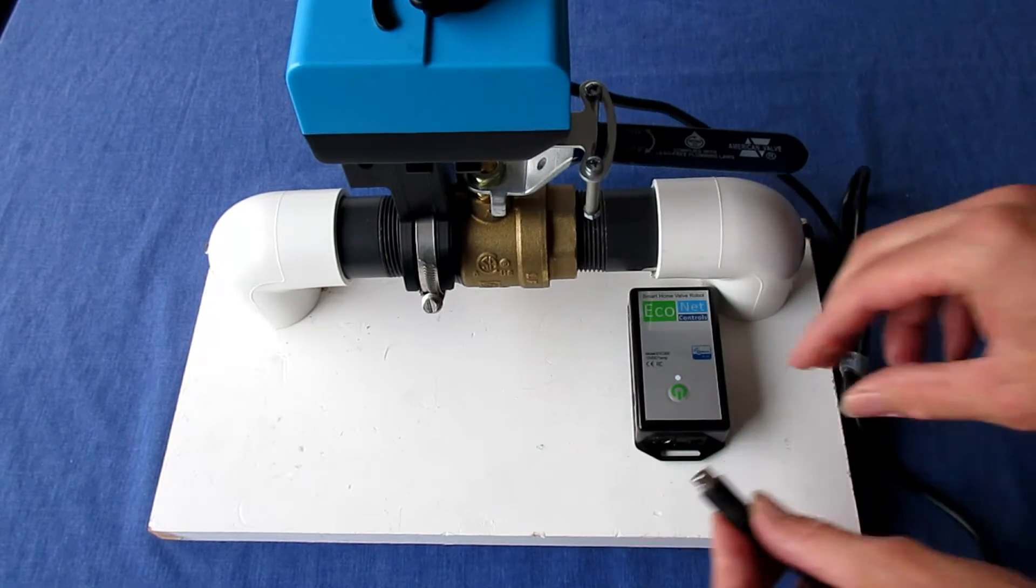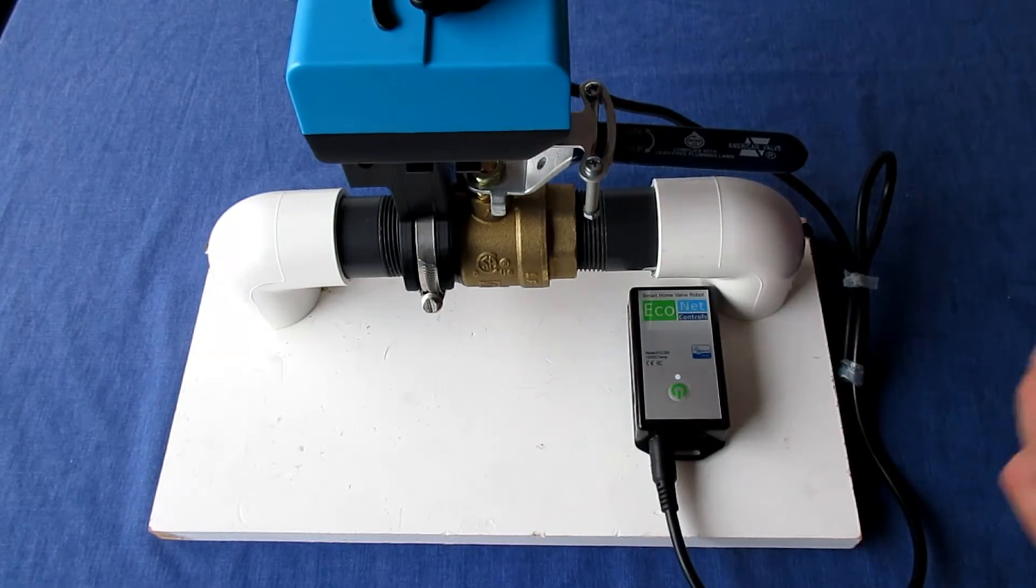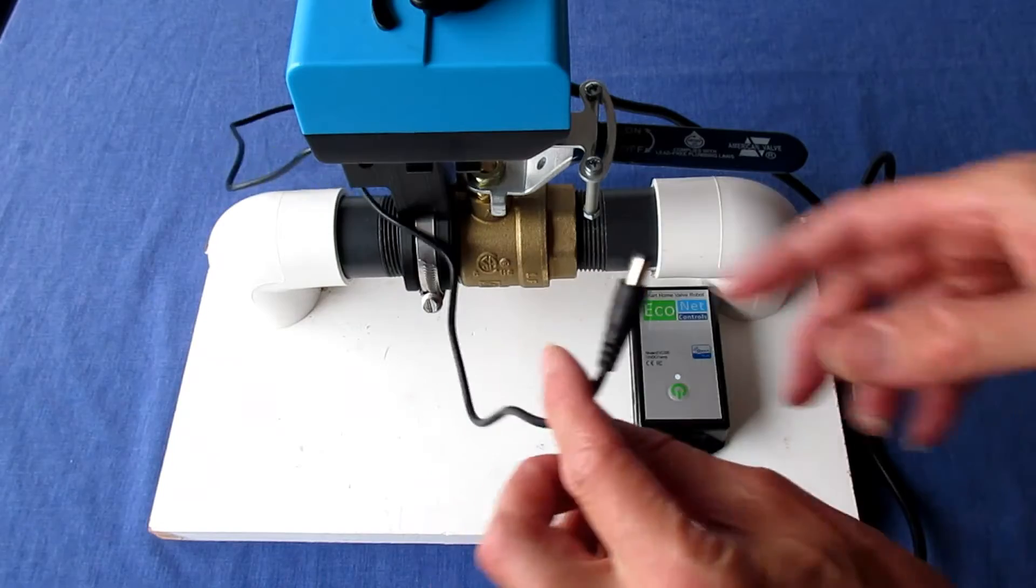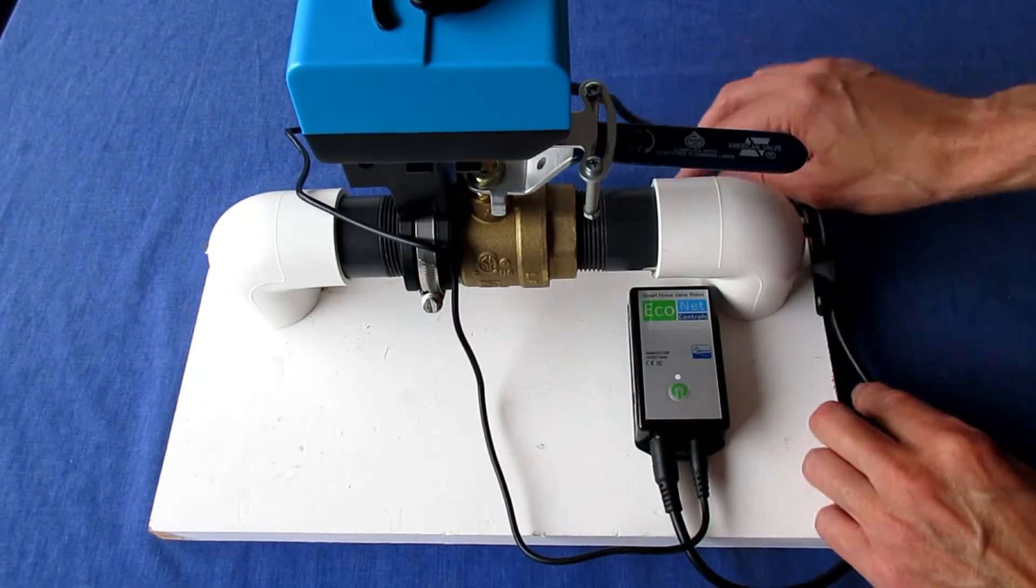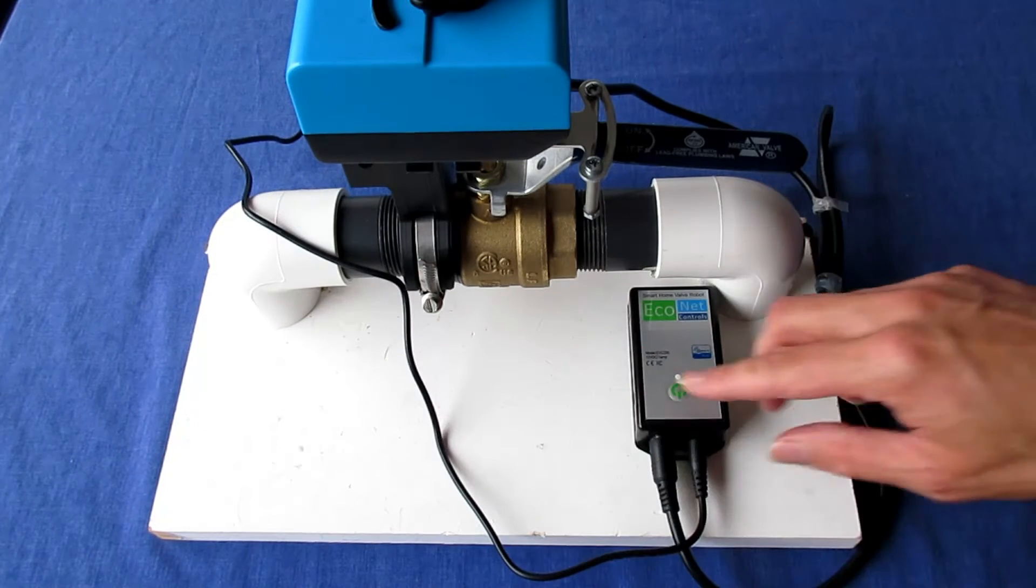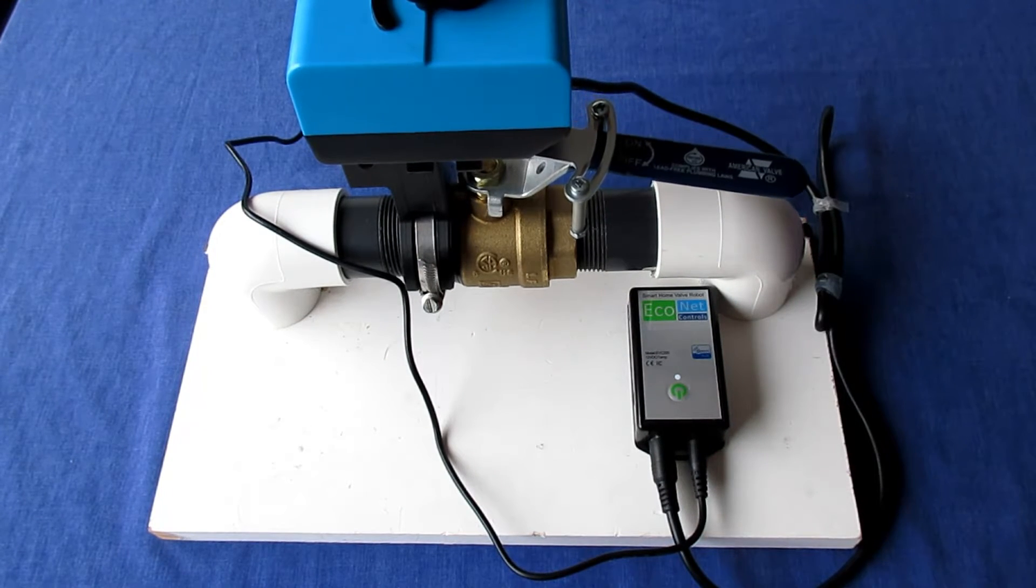Plug in the Bulldog to the controller. Be careful, the plug only fits in one direction. Plug in power to the controller and test the operation by pressing the button. The Bulldog should move smoothly and remain solid on the valve.